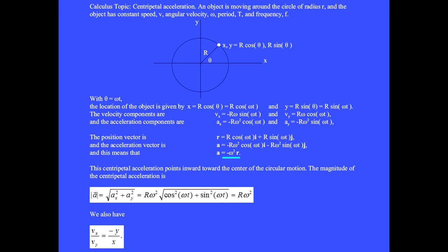The minus sign means that the acceleration vector is pointing inward toward the center of the circular motion because the position vector r is pointing radially outward.